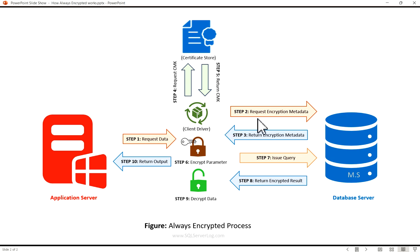Step two is request encryption metadata. When executing a query that involves encrypted columns, any plain text values intended for those columns must be provided as parameters and encrypted prior to transmission to the database. In cases where a parameterized query is executed, the client driver requests encryption metadata from SQL Server to determine the necessary encryption actions before sending the query for execution.